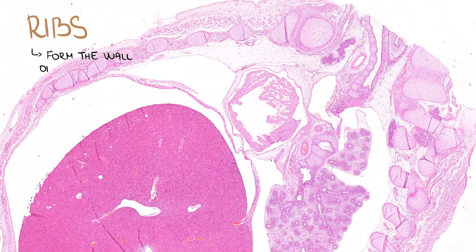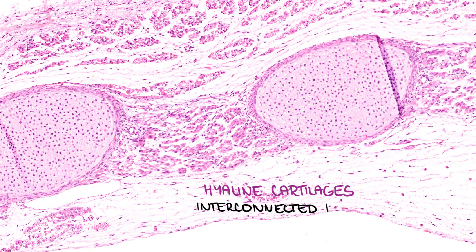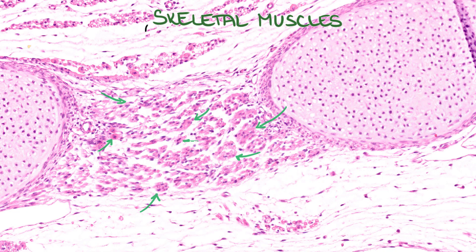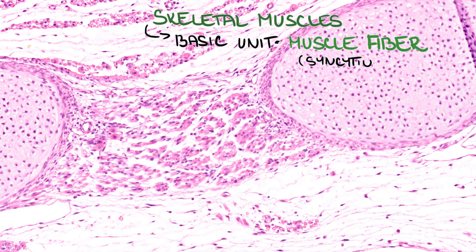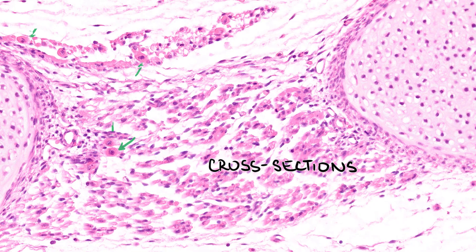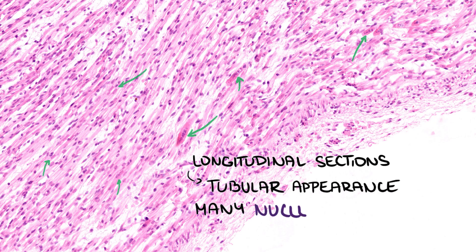Ribs form the wall of the thoracic cavity. We can see them as hyaline cartilages which are interconnected by skeletal intercostal muscles. We can observe developing muscles at various places in our slide. The basic unit of a skeletal muscle is the muscle fiber — it is a syncytium formed by the fusion of several cells called myoblasts. Merging myoblasts form myotubes, which can be seen in the fetus. These are cross sections of myotubes where we can see the eosinophilic cytoplasm and centrally located nucleus. In longitudinal sections of other developing muscles, we can see their tubular appearance with many nuclei in the center.